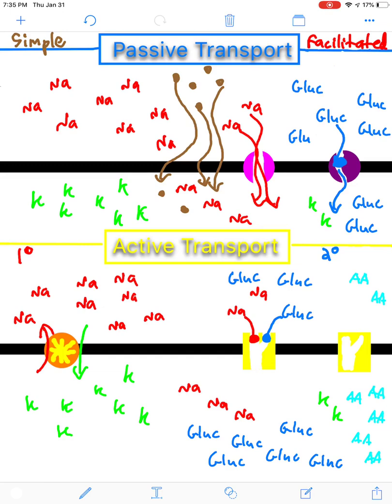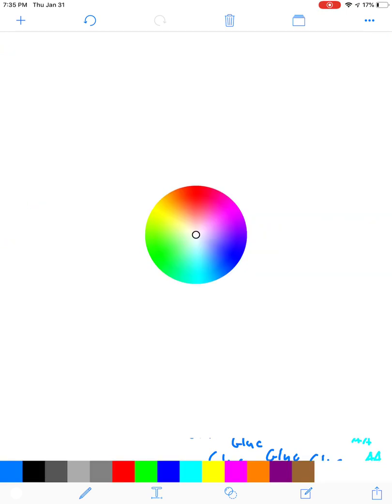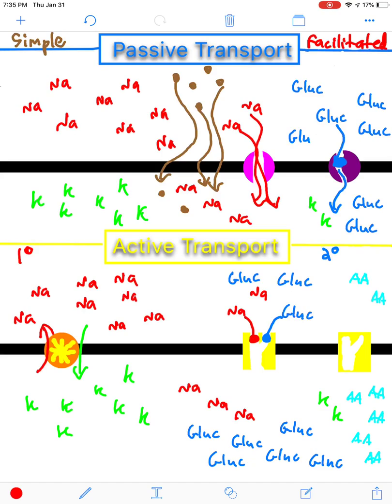And once both molecules are in this transport protein, it causes a change in shape. Such that the other side opens up, and it acts almost as a catapult would, or a switch. Such that now, spots are open, sodium rushes down its gradient. And again, this is a gradient that you use ATP to create. And when ATP goes through, it brings glucose along with it, against its gradient.